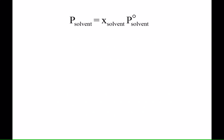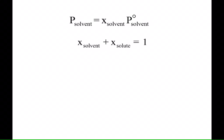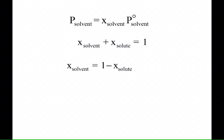Raoult's Law — you guys buy that? What does the knot with the solvent mean? Pure stuff. Is the equilibrium vapor pressure going to be higher or lower for a mixture that has a solute added to it? It's going to be lower — equilibrium vapor pressure lowering. X stands for mole fraction. So if you only have two things, the solvent and a non-volatile solute, the mole fractions should add up to one. We're going to do a little substitution. The mole fraction of the solvent is one minus the mole fraction of the solute, and we substitute that back into Raoult's Law.